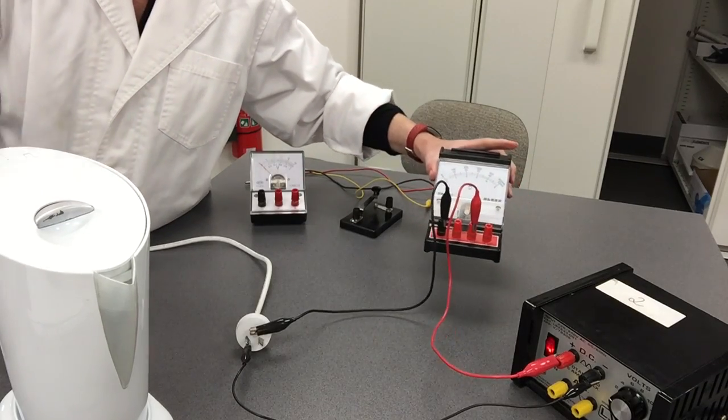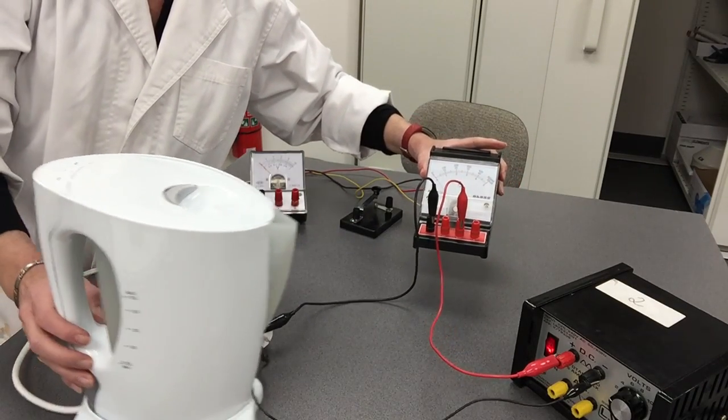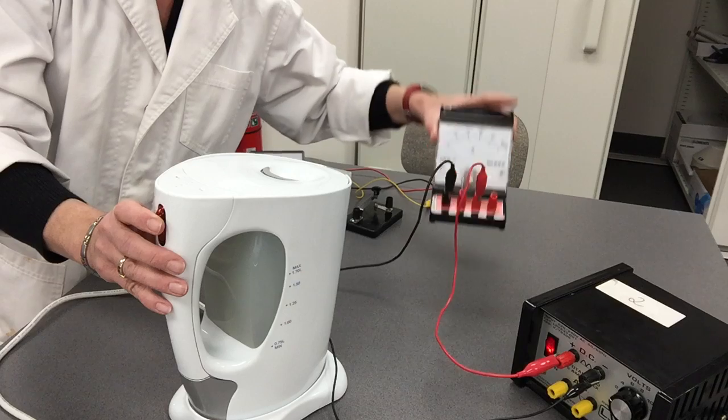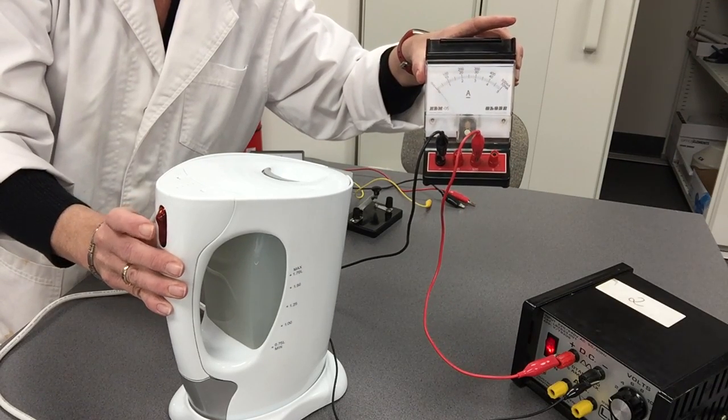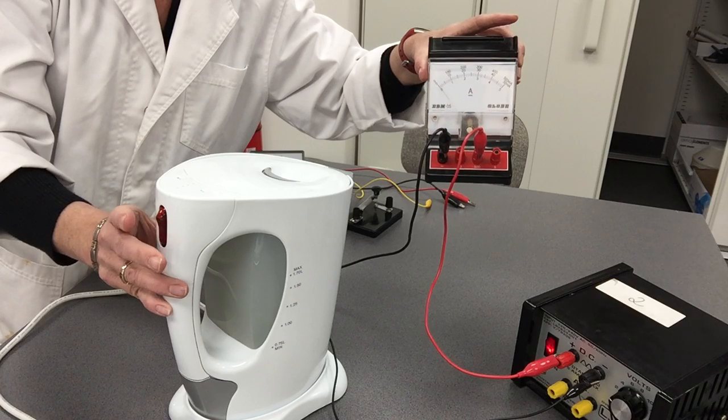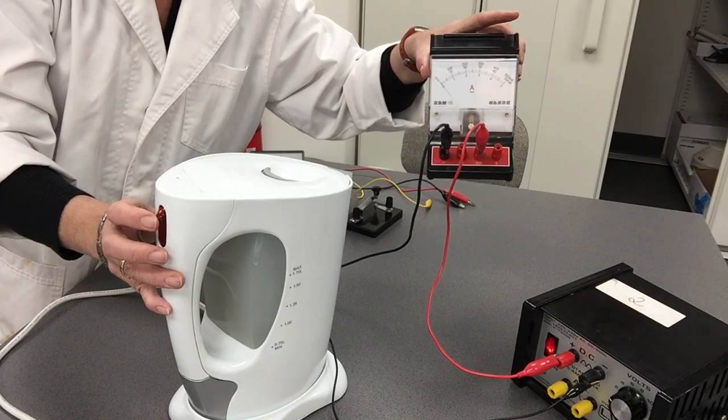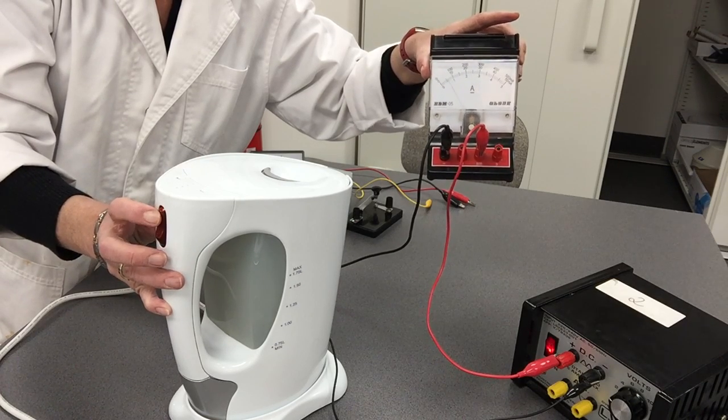There is your first series circuit. If I switch that on and turn my kettle on, this is your switch. You can see you get a current reading. This is my switch completing my circuit and my current reading.